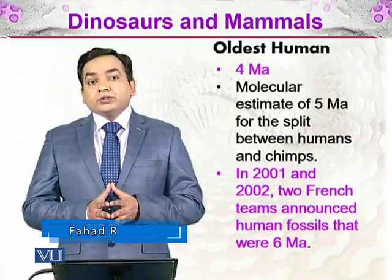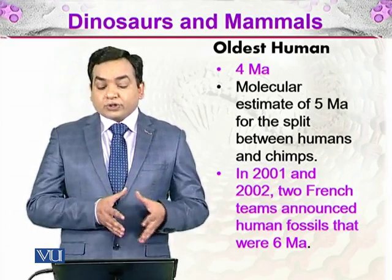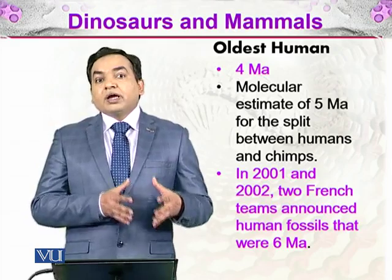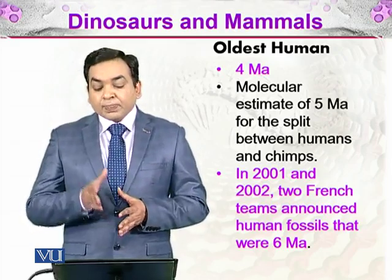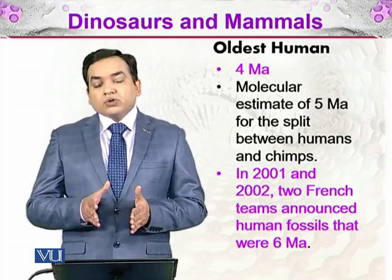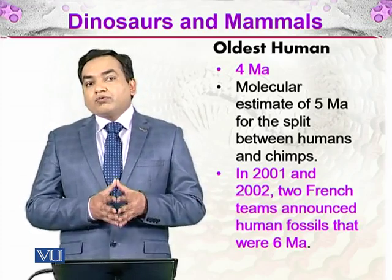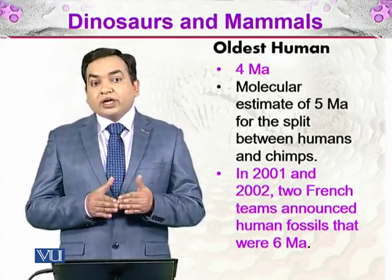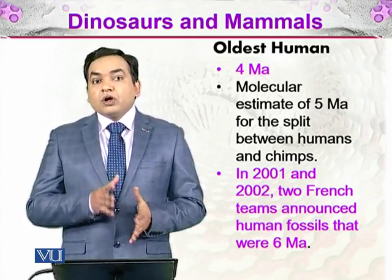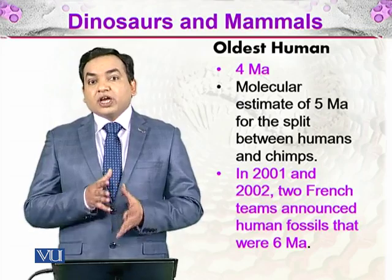The oldest human-like forms considered as ancestors of humans were found in layers 4 million years old. The molecular estimate places the split between humans and chimps at 5 million years ago. This coincides with fossil evidence, as molecular studies show chimpanzees and humans shared a common ancestor 5 million years ago, lending credibility to both lines of evidence.